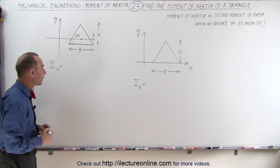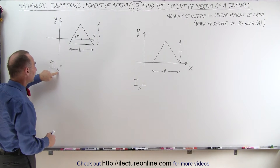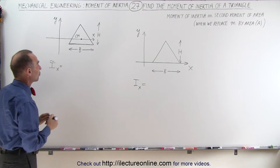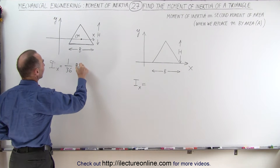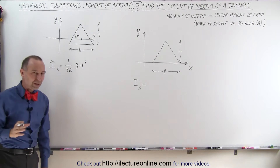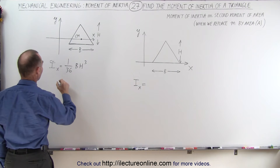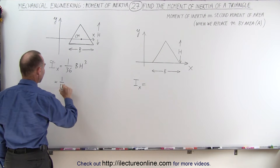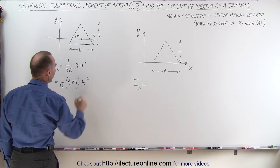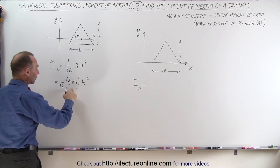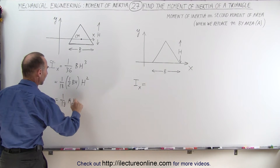So what do the equations look like? In this case, we have a symbol here indicating that it's the moment of inertia relative to the x-axis, which goes right through the center of mass of the triangle, and it's equal to 1 over 36 times the base times the height cubed. Realizing that the area of a triangle is equal to 1 half the base times the height, we can factor that out, so this is equal to 1 over 18 times 1 half the base times the height, and what we have left is height squared. So this becomes 1/18th the area times the height squared.